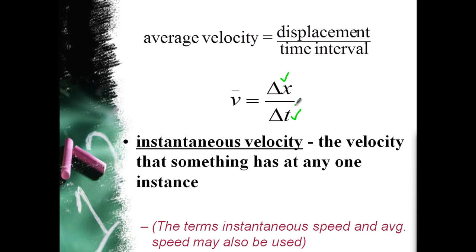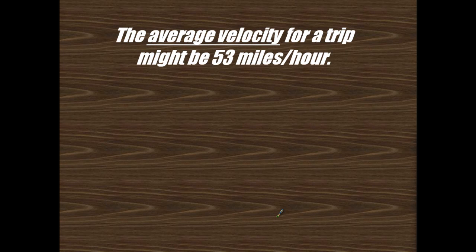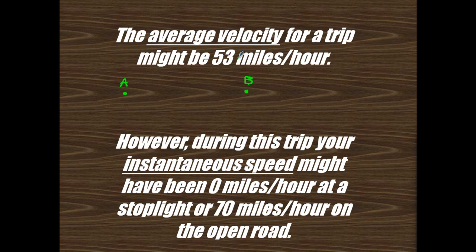Now instantaneous velocity is the velocity that something has only at one instance. Sometimes you'll see in the book too, it'll be instantaneous speed or average speed. So the average velocity for a trip might be 53 miles per hour because we're only talking about displacement from point A to point B. But during this trip, your instantaneous speed might have been zero miles per hour at a stoplight. So you might travel here. Oh, crap. There's a stoplight. You've got to wait. So you stop, wait here for a couple seconds. Then you speed up because you're on the highway now. So it might be zero at one point. It might be 70 while you're on the highway. But all together, the entire displacement divided by your time might only give you 53 miles per hour.